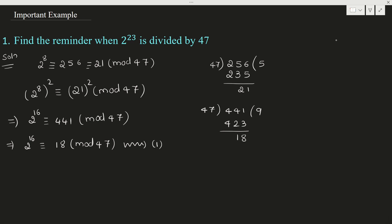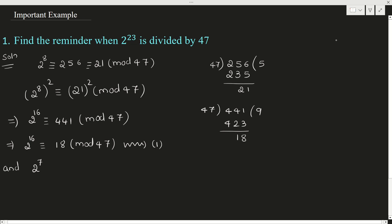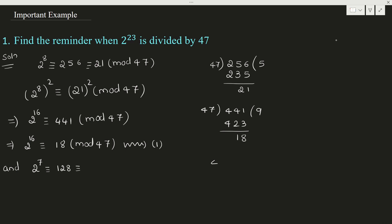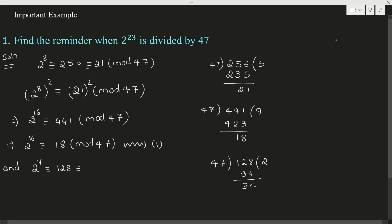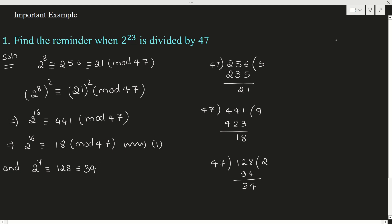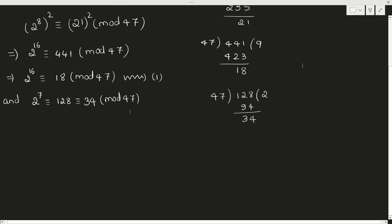We got power 16 but we need 23. We have 16, so 23 minus 16 means we need 7 more. So directly write 2 to the power 7. What is 2 to the power 7? It is 128. Check when you divide 128 by 47: 47 times 2 is 94, and multiplying by 3 exceeds 128, so the remainder is 34. We can write 2 to the power 7 is congruent to 34 mod 47. Call this equation 2.